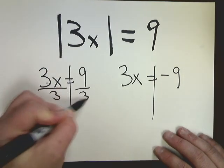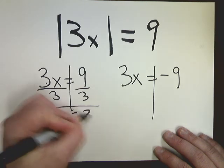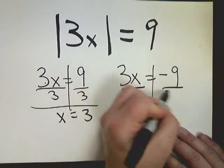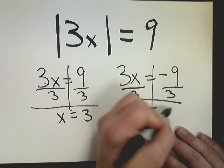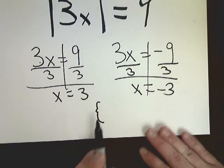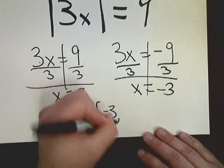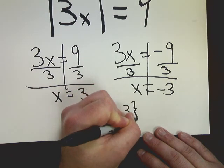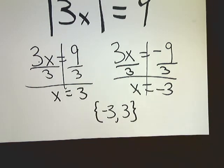This is 3 times x, so I'm going to divide by 3. x is equal to 3. Divide by 3 here. x is equal to negative 3, so in my little face profile brackets here, that's what I'll call them, my answer set should be negative 3 and 3.